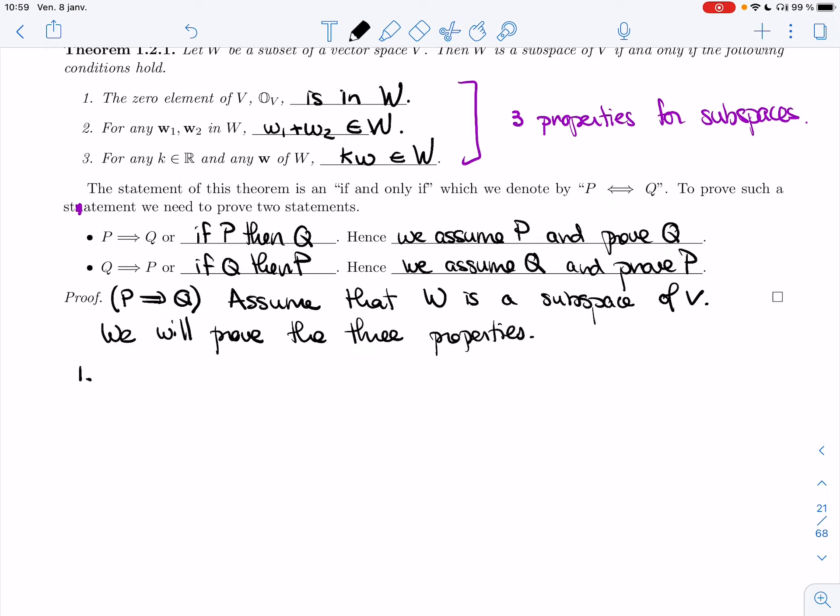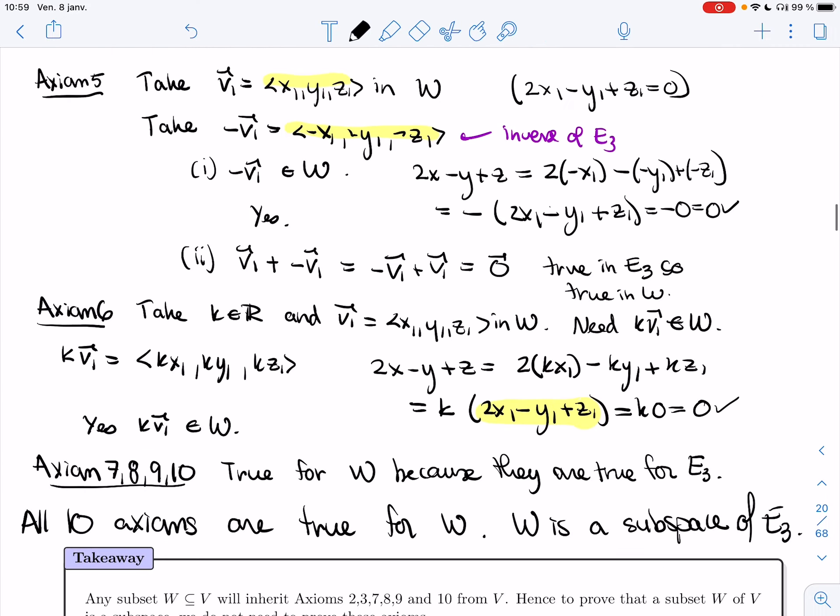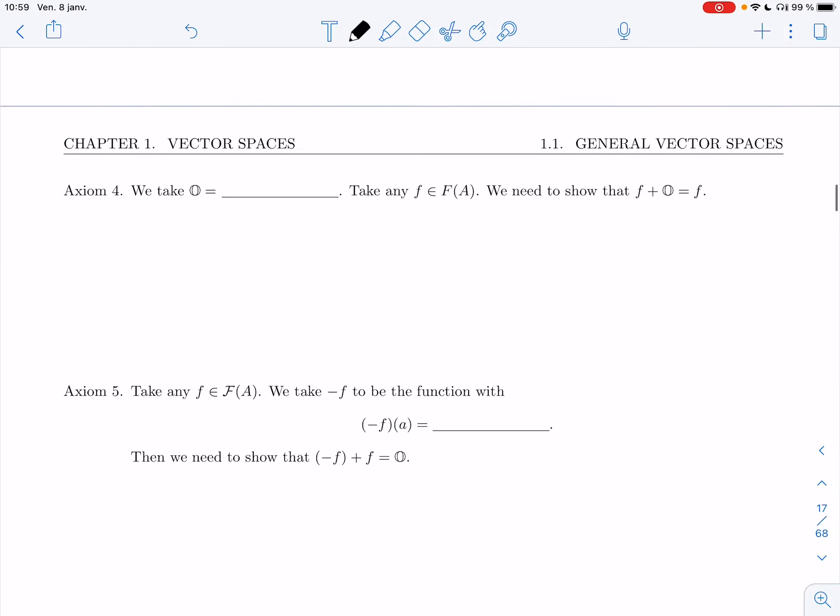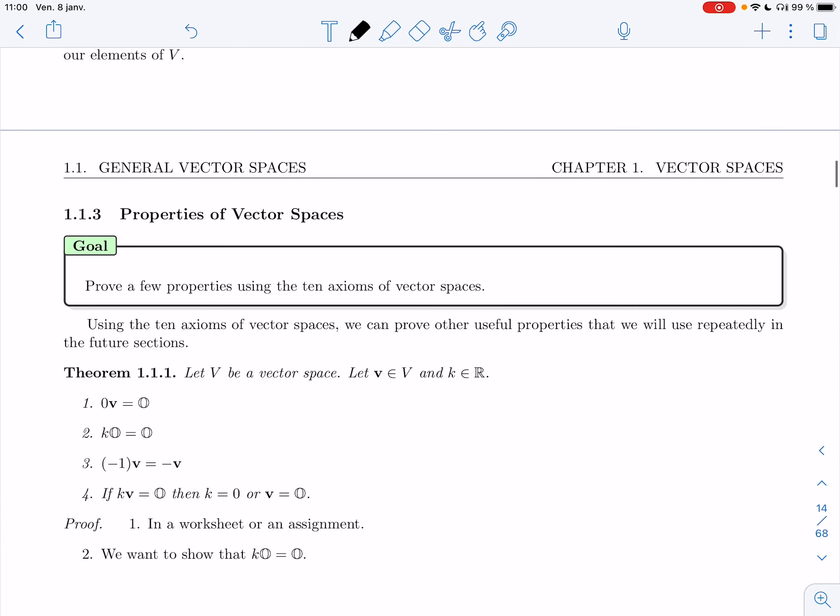First, I need to prove that the zero element of V is in W. So I have one element in W that I know for sure because it's a subspace. I have 0_W. That's an element of W. But remember that W is a subset of V, so it's also an element of V. If I multiply that element by zero, the zero real number, well, I have a theorem that tells me what I get. Theorem 1.1.1.